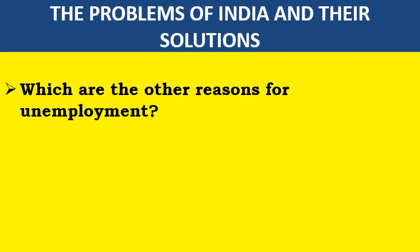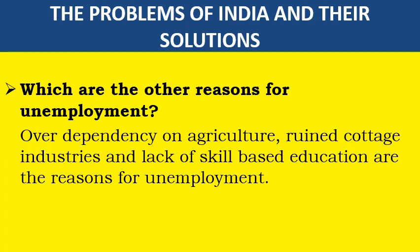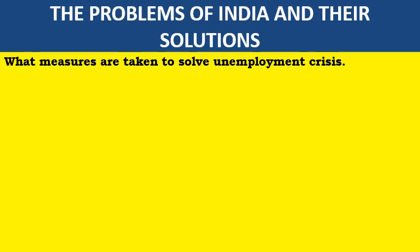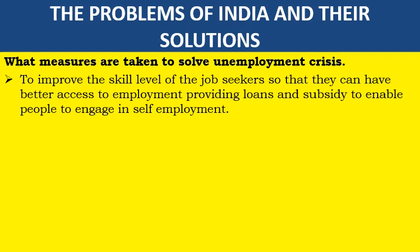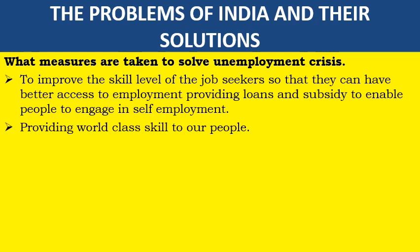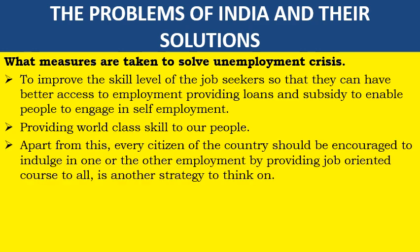What are the other reasons for unemployment? Overdependency on agriculture, ruined cottage industries, and lack of skill-based education are the other reasons for unemployment. What measures are taken to solve the unemployment crisis? To improve the skill level of job seekers so that they can have better access to employment, providing loans and subsidy to enable people to engage in self-employment, and providing world-class skills to our people.